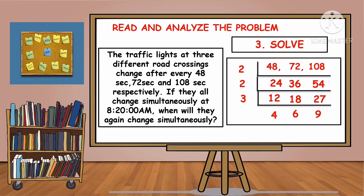Since we are looking for the GCF, we will stop the process of dividing. Now, multiply all the numbers on the vertical side to find the GCF. 2 times 2 times 3 is equal to 12. So, the answer is 12.